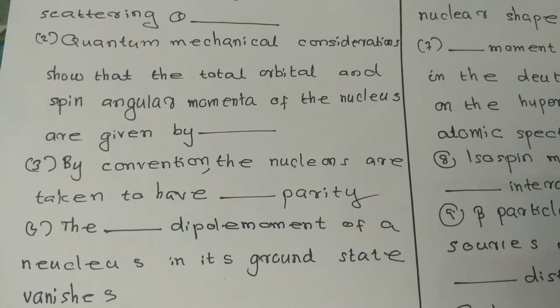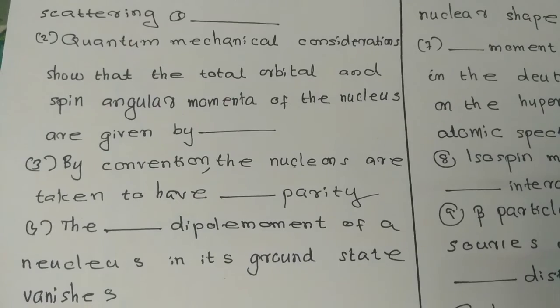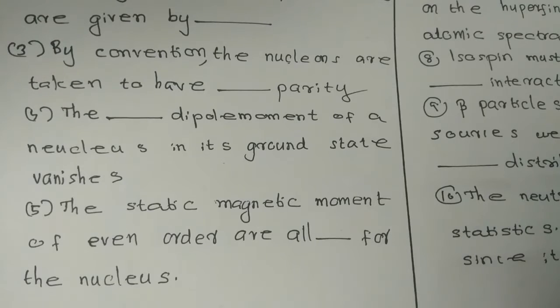Question number four: the dash displacement of a nucleus in its ground state vanishes. Question number five: the static magnetic moment of even order are all dash for the nucleus.